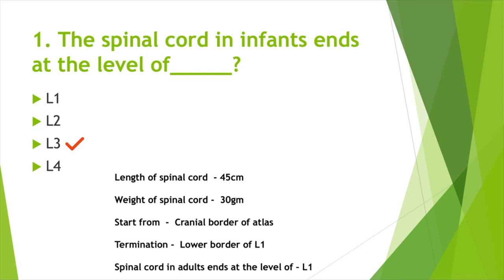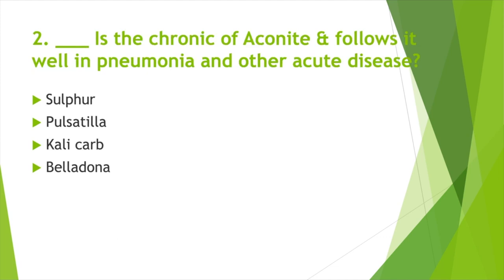The length of the spinal cord is 45 centimeters; weight is 30 grams. It starts from the cranial border of the atlas. Termination: lower border of L1. The spinal cord in adults ends at the level of L1.